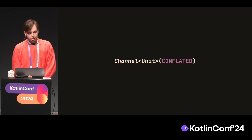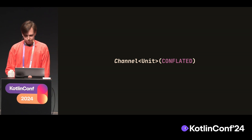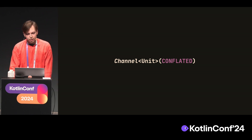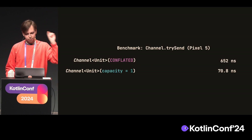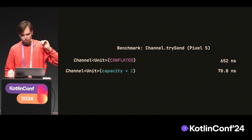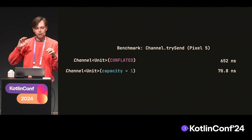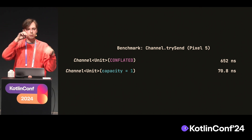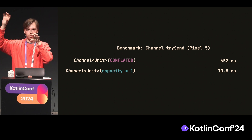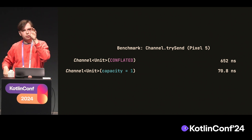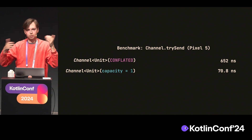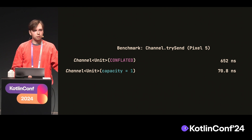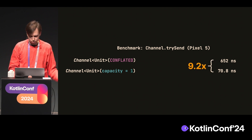The last thing about coroutines is channels — specifically the conflated kind. We were using conflated channels to schedule things to run at the end of the frame. Interestingly, a conflated channel is about 10 times slower than a channel with capacity of 1. The reason is that a conflated channel takes the new element, puts it in the buffer, and removes the old one. A channel with capacity 1 does the opposite — if an element is already there, it just drops the new one, which is much cheaper: just compare unit with unit and drop it. We've reported all of these things to the Kotlin team and they're working on improving them. It's about a 9-to-10x difference.